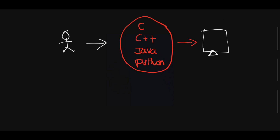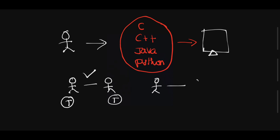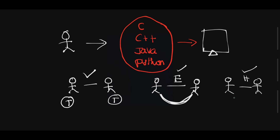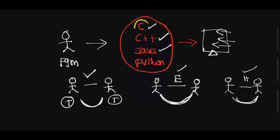The programmer should be proficient in one programming language. For example, in person-to-person communication, if you know Telugu both can communicate; if both know English they can communicate; if both know Hindi they can communicate easily. Similarly, if a programmer knows C language he can develop applications; if he knows C++ he can develop applications; if he knows Java he can develop applications. As a programmer, a person must be perfect with one programming language.